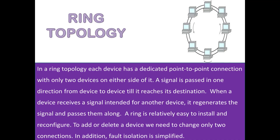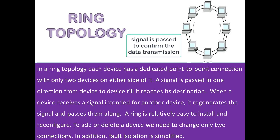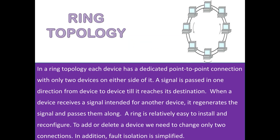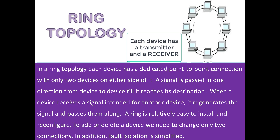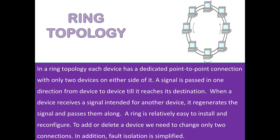Next we have Ring Topology. In a ring topology, each device has a dedicated point-to-point connection with only 2 devices on either side of it. Each device is interconnected having a point-to-point connection. A signal is passed in one direction from device to device till it reaches its destination. Each device has a transmitter and a repeater inside it, so when a device receives a signal intended for another device, it regenerates the signal and passes it along. If a signal is not received in a specific time, an alarm is issued, alerting the device that data has not been received.